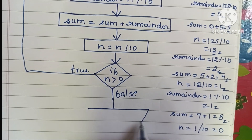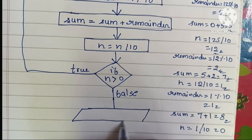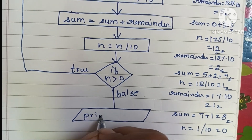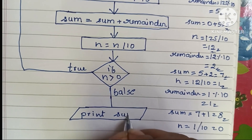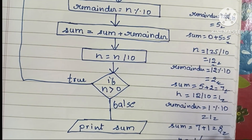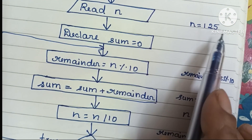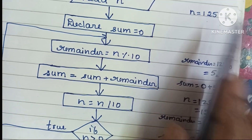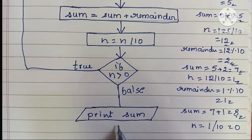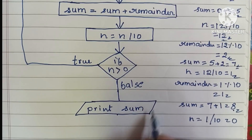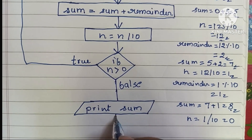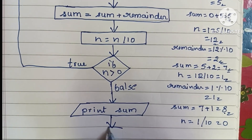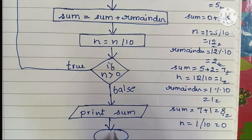Since the condition is false, we print the output value. The sum is stored in sum — its value is 8, which is 1 plus 2 plus 5. Output values are written within a parallelogram shape. Next, we stop the flowchart using the stop statement.